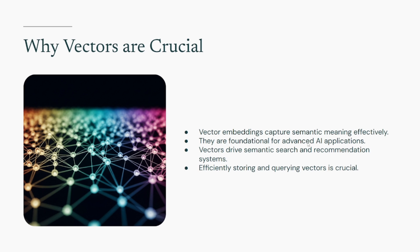Vector embeddings are essentially numerical representations of all sorts of data — text, images, audio, video — that capture their semantic meaning and relationships. These embeddings are the language AI models understand. They're fundamental for everything from retrieval augmented generation, or RAG, to semantic search, recommendation systems, and even giving AI agents long-term memory. The challenge, of course, has always been storing and querying these potentially billions of vectors both affordably and efficiently.